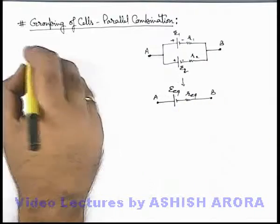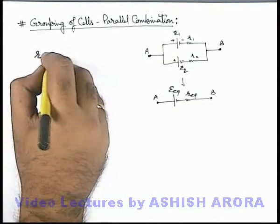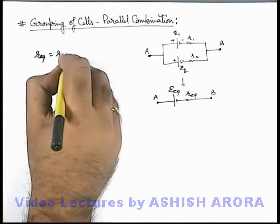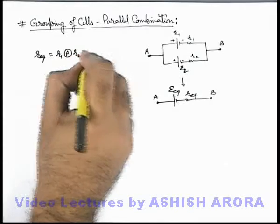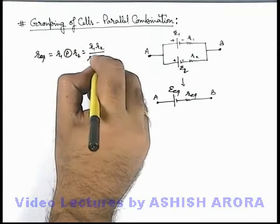So in this situation we can directly write r_equivalent as r1 in parallel combination with r2, that can be written as r1·r2/(r1+r2).